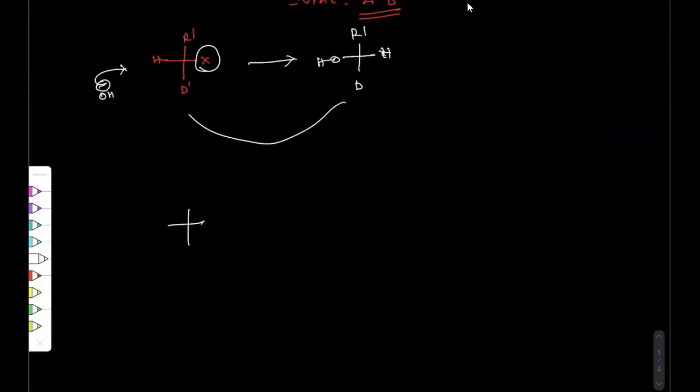Suppose when we have the leaving group is the top priority, but the incoming group may not be the priority. Then you can't observe inversion in its configuration.